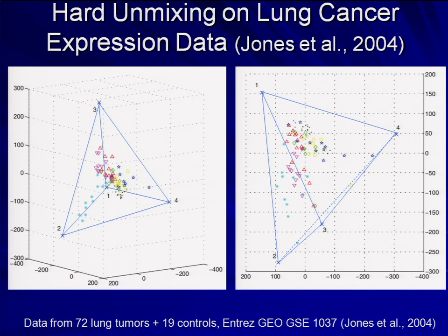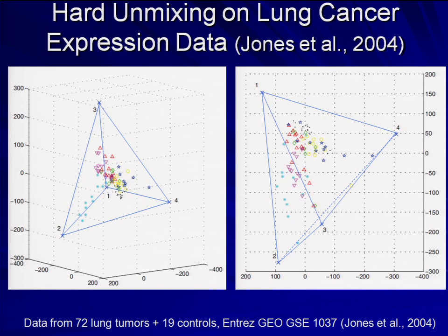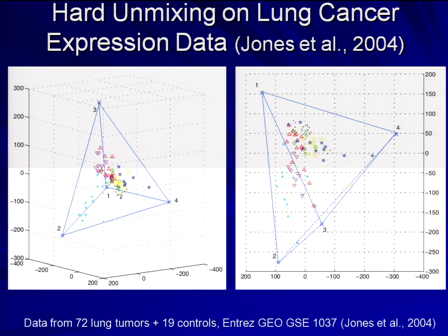Looking at an embedding of lung tumor data, you can see clusters of points that seem to correspond to different classes. There's one group sitting above the normal section, and other points that seem bounded. This approach does a decent job of separating distinct cell states, but it doesn't always get the best fit.